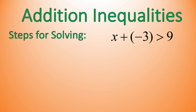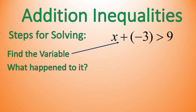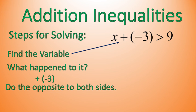Let's try one with integers. We have X plus negative 3 is greater than 9. We're going to follow the same steps. Find your variable. Where is it? Right there. X. What happened to it? We added negative 3. So we're going to do the opposite to both sides of this inequality. We're going to subtract negative 3.